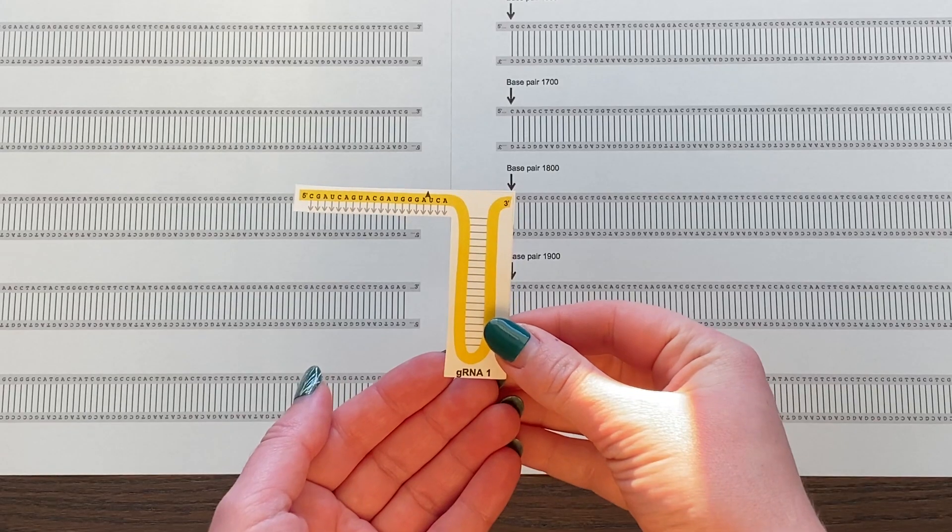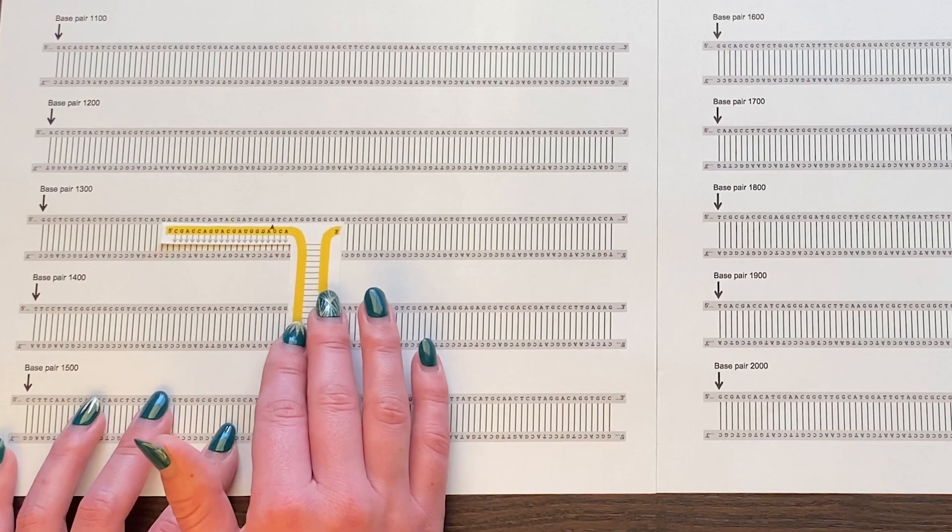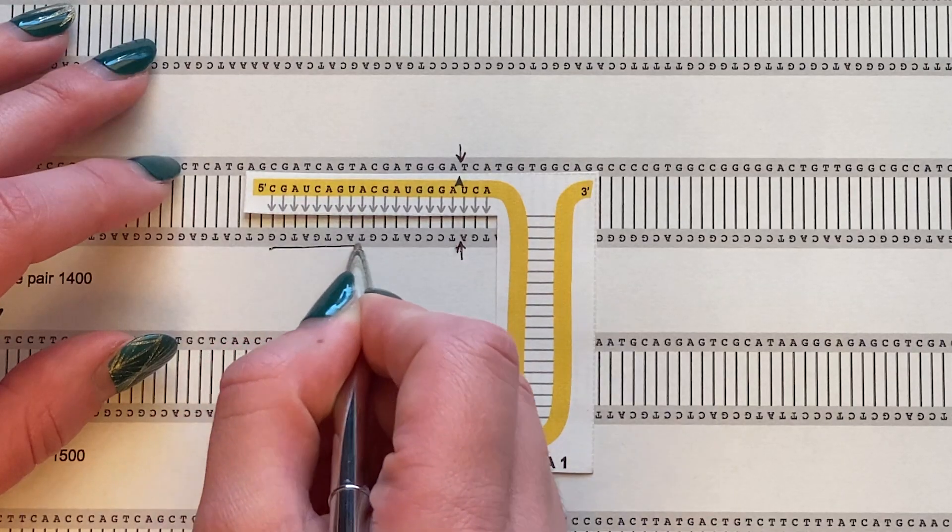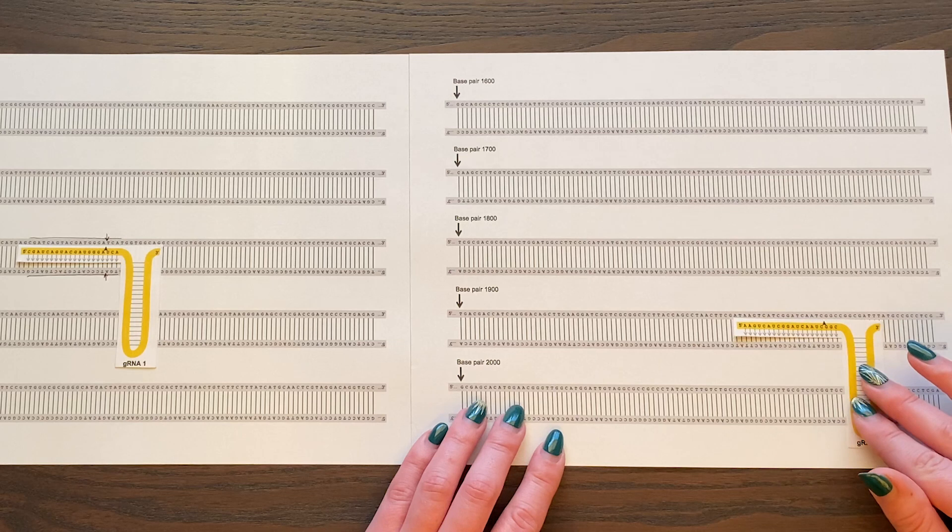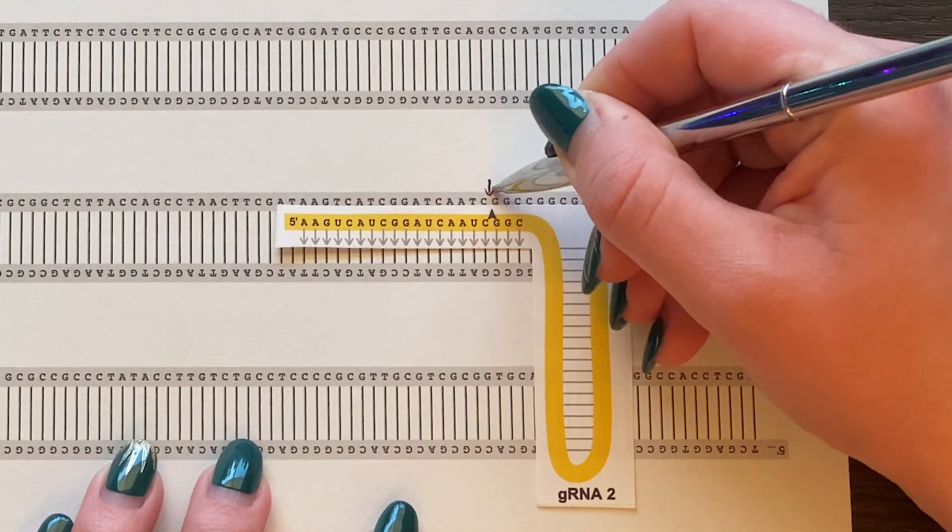First, you and your students can analyze the sequence of the DNA sample in an optional pre-lab activity. By visualizing where in the sequence the different guide RNAs will instruct the Cas enzyme to cut, students will be able to predict the sizes of the resulting DNA fragments.